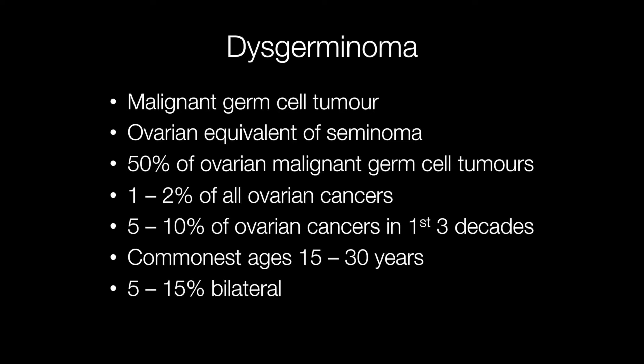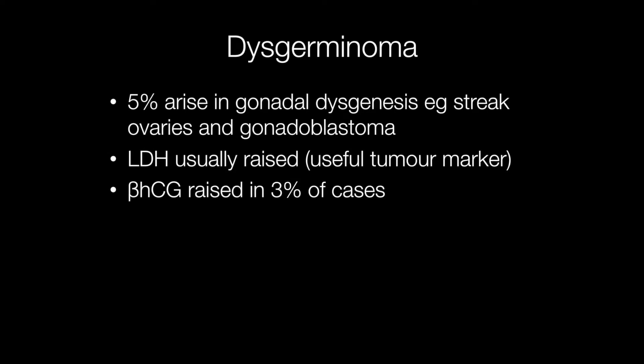The tumour in one of the ovaries may just be a microscopic focus when it is bilateral. Approximately 5% of dysgerminomas arise in gonadal dysgenesis — that is when the ovary is malformed, such as streak ovaries — and 50% of gonadoblastomas have a co-existent dysgerminoma.